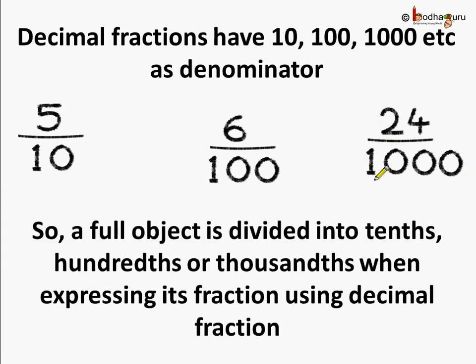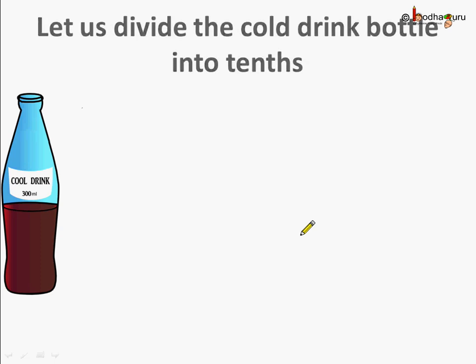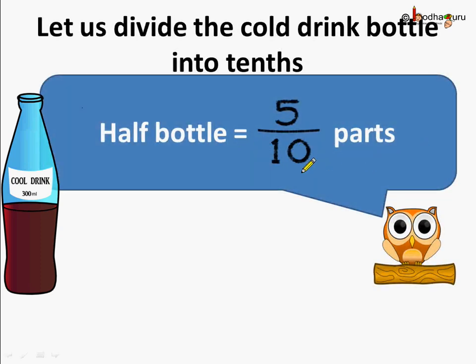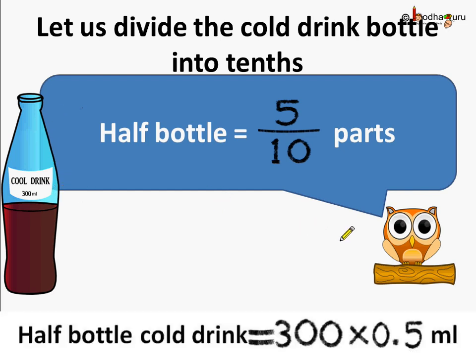This is thousandths. Now let's come back to our bottle. Let's say we divide this bottle into tenths. Half a bottle is nothing but five by ten parts. Five by ten is the same as half — five divided by ten is one by two. So half a bottle is five by ten parts, or if the bottle is divided into tenths, you are taking five parts of it. If this is divided into ten parts — one part through to tenth part — half bottle is taking five by ten parts. This is one half, this is another half. So half a bottle of cold drink is nothing but 300 milliliter multiplied by five by ten, or 300 milliliter multiplied by zero point five.